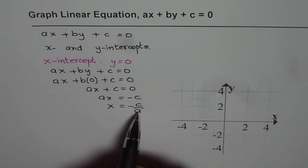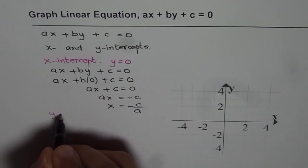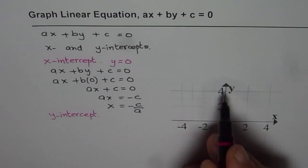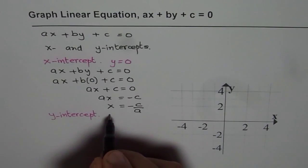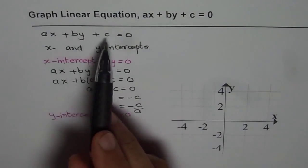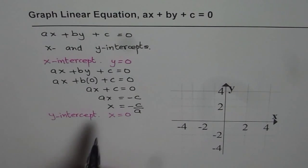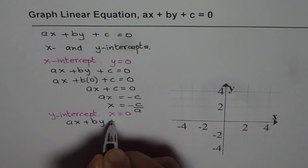Once we know one of the points, the idea is to get the second point. The second point is the Y intercept. The Y intercept is a point where the line crosses the Y axis. At that point, the X value is going to be 0. So at Y intercept, X is equal to 0. We can reorganize the equation in terms of Y and substitute X equals to 0 to find the Y intercept. Let me reorganize the equation first and then substitute the value. We have the equation AX plus BY plus C equals to 0.